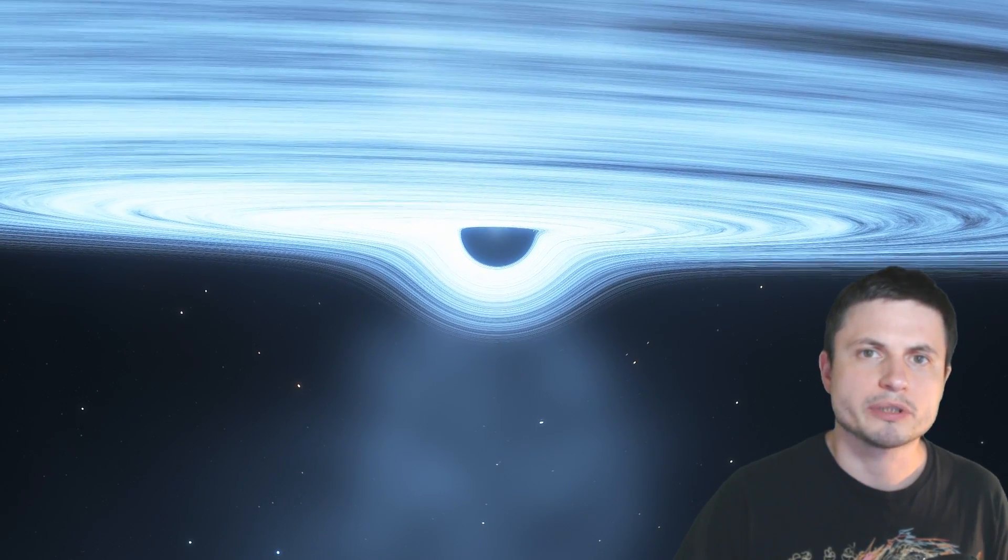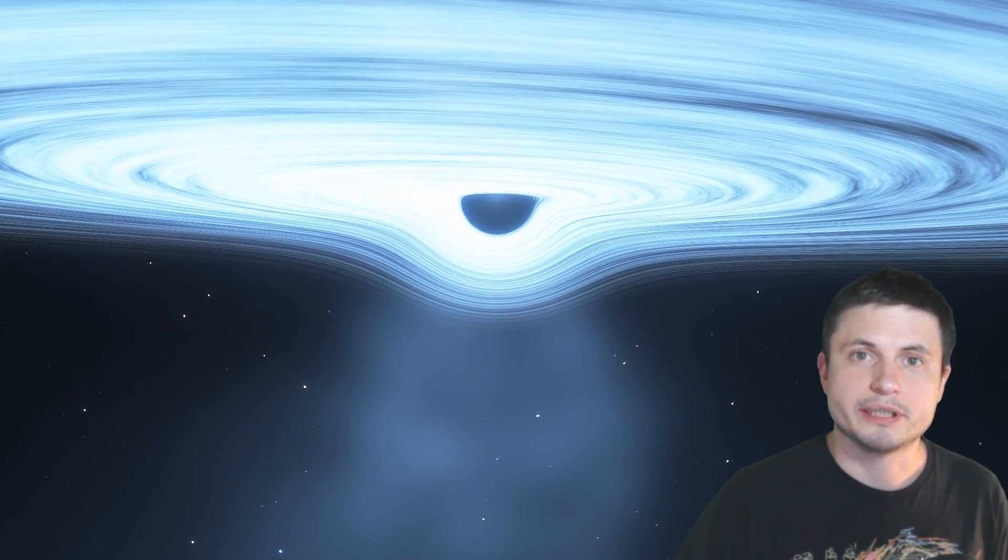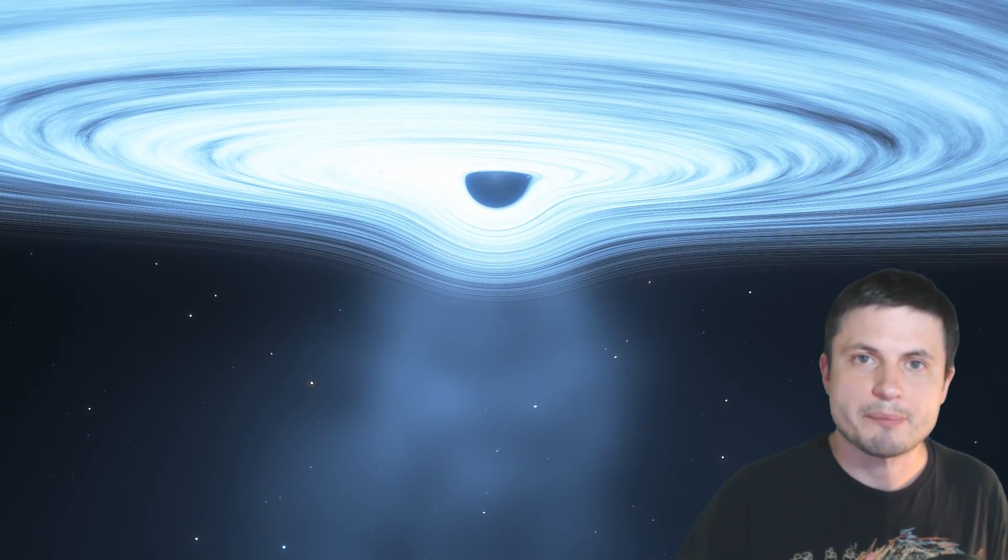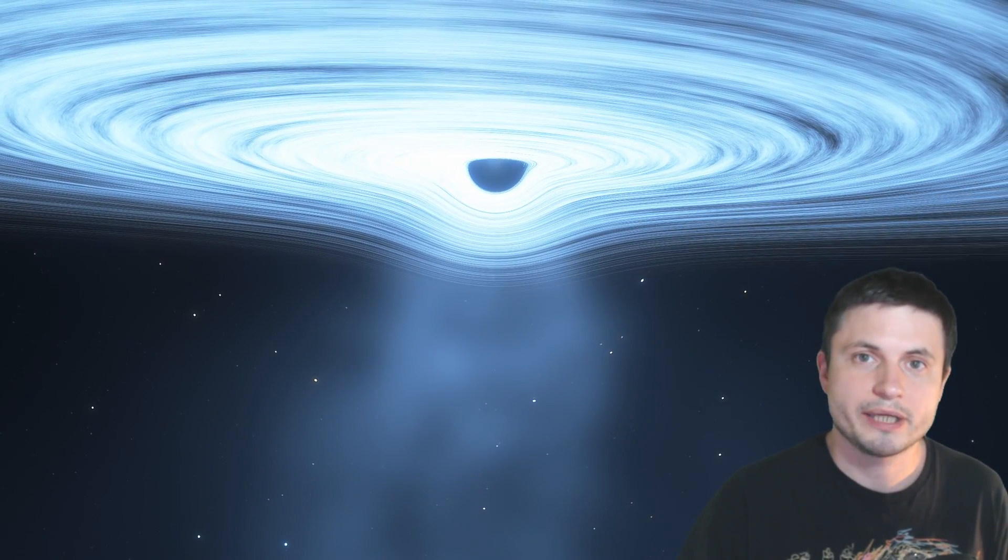This is the one in the middle of our own galaxy Sagittarius A star. Now as you can probably tell just from the actual shape of the accretion disk and the sheer size a lot of things are happening here. A lot of things are colliding here and a lot of things are being created and destroyed.